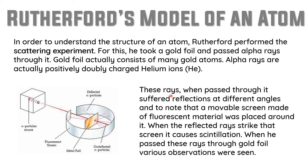These alpha particle rays, when passed through the gold foil, suffered reflections at different angles. A movable screen made of fluorescent material was placed around it. When the reflected rays strike that screen, it causes scintillation — when particles come through the gold foil and touch this screen, you can see a flash of light, which is called scintillation.